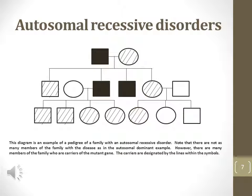This is an example of a pedigree of a family with an autosomal recessive disorder. Note that there are not as many members of the family with the disease as in the dominant example we just saw. However, there are many members of the family who are carriers of the mutant gene.